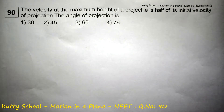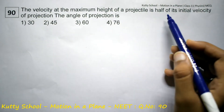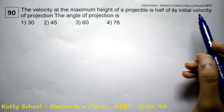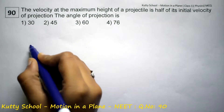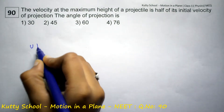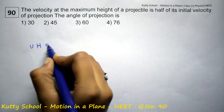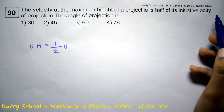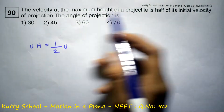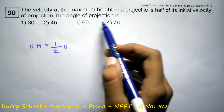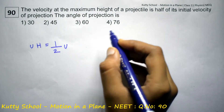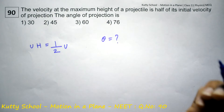The velocity at the maximum height of a projectile is equal to half of its initial velocity of projection. The angle of projection is — so theta is equal to what?